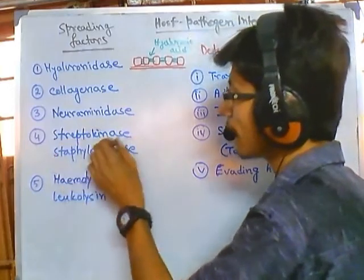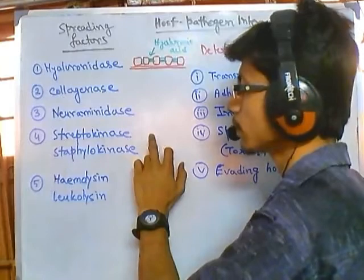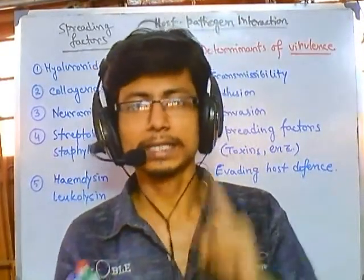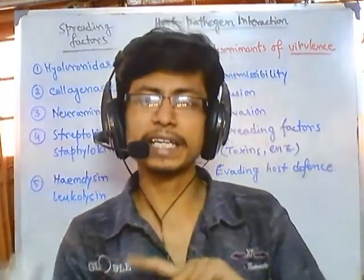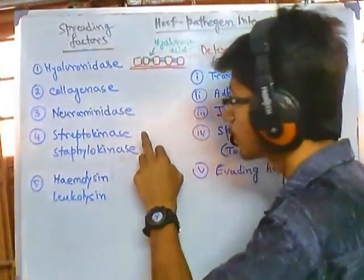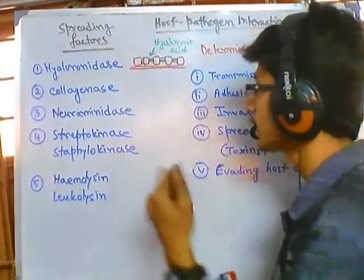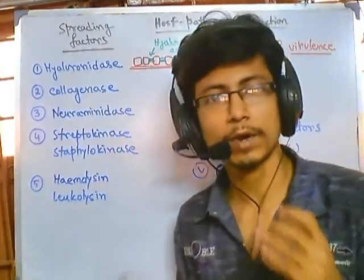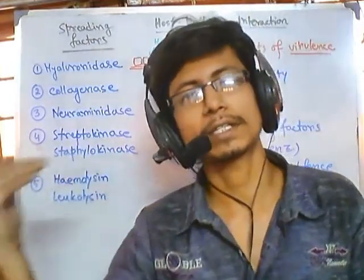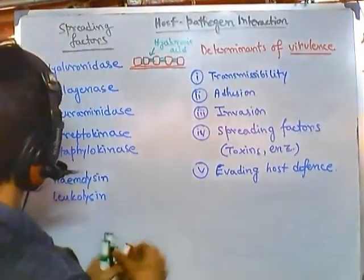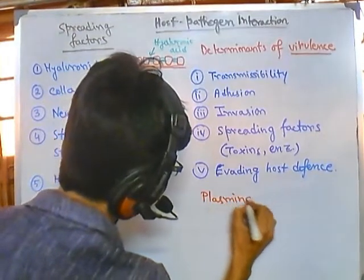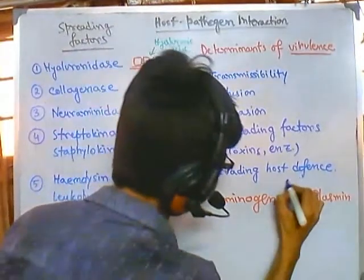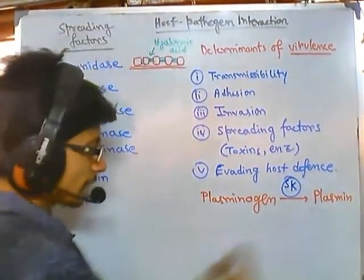The fourth factor is streptokinase (secreted by Streptococcus) and staphylokinase (produced by Staphylococcus). As kinase enzymes, they phosphorylate and activate or deactivate other things. In this case, streptokinase and staphylokinase act on plasminogen - an inactive form of a protein - and convert it into plasmin, the active form.